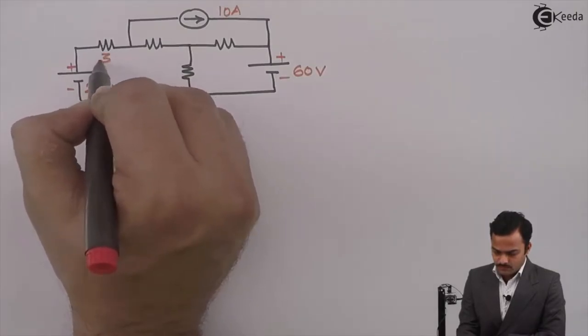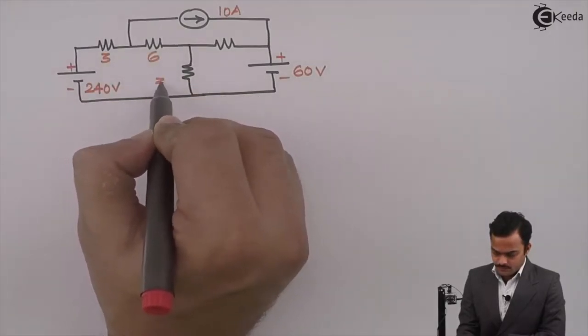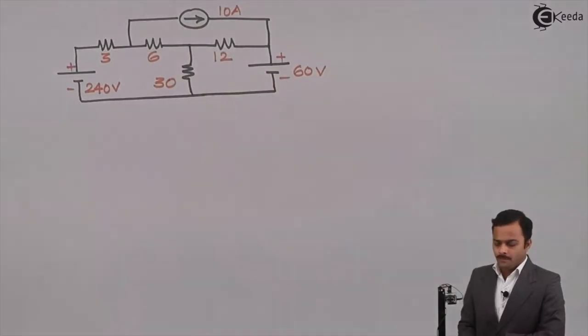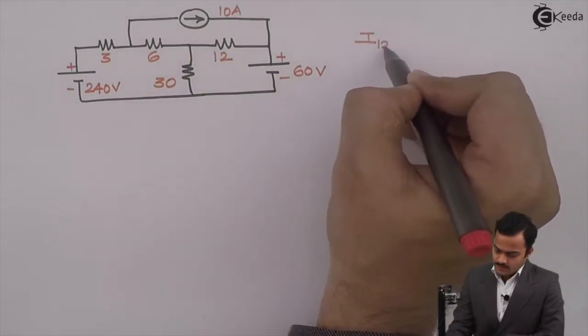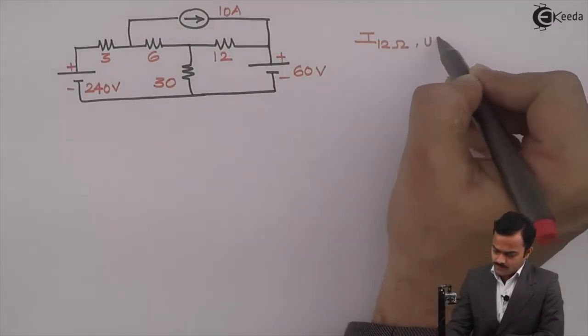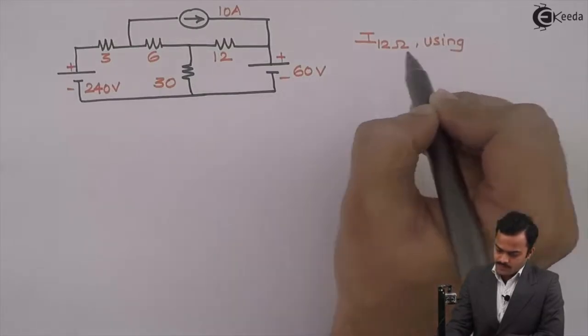Resistances are 3 ohm, 6 ohm, 30 ohm and 12 ohm. Objective is to get the current flowing through 12 ohm resistance using Thevenin's theorem.